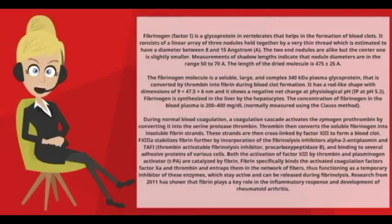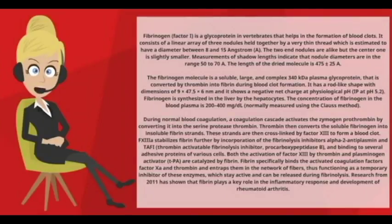Fibrinogen factor I is a glycoprotein in vertebrates that helps in the formation of blood clots. It consists of a linear array of three nodules held together by a very thin thread, estimated to have a diameter between 8 and 15 Å. The two end nodules are alike but the center one is slightly smaller.